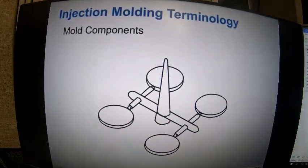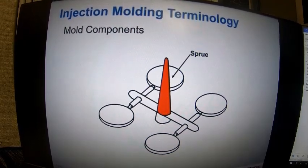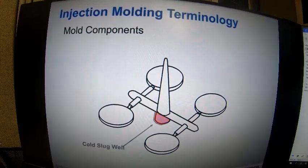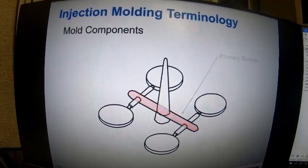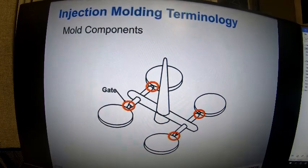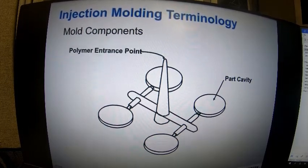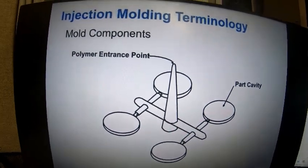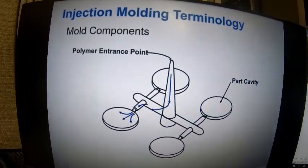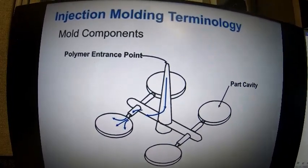We'll discuss some of the injection molding terminology for a typical molded component. We have our sprue, our cold slug well, our primary runner system, our secondary runner system, and the gates. We have a polymer entrance point that starts at the top of the sprue — that's where flow begins and fills through the sprue, through the primary runner, through the secondary runner, through the gate, and finally into the part cavity.